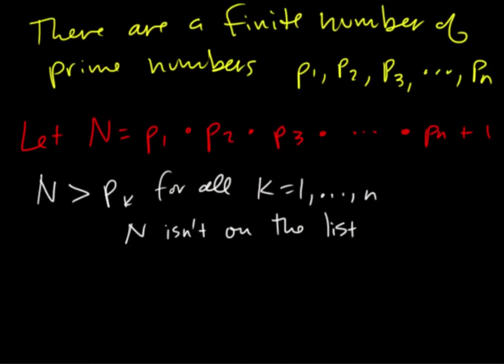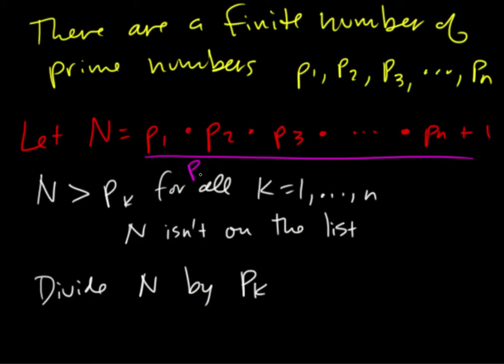Okay, and then if we divide N by any pk, then the remainder will be one. So for example if we divide this by p1...